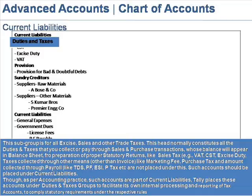Tax collected through other means other than invoice, like marketing fee, purchase tax, and amounts collected through payroll like TDS, PF, ESI, P-tax, etc., are not placed under this. Such accounts should be placed under Current Liabilities. Though as per accounting practice such accounts are part of Current Liabilities, Tally places these accounts under Duties and Taxes groups to facilitate its own internal processing and reporting of tax accounts to comply with statutory requirements under the respective rules.